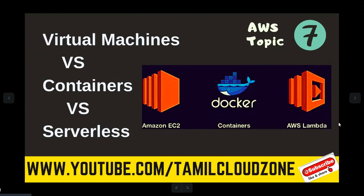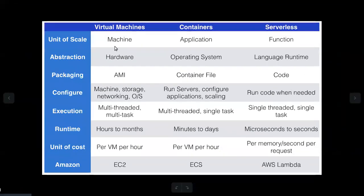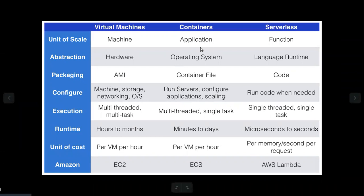We will talk about end user and consumer management. If you look at the unit of scale, for EC2 we talk about the machine and auto-scaling. For ECS, the unit of scale is the application, and for Lambda, the unit of scale is functional — the function.